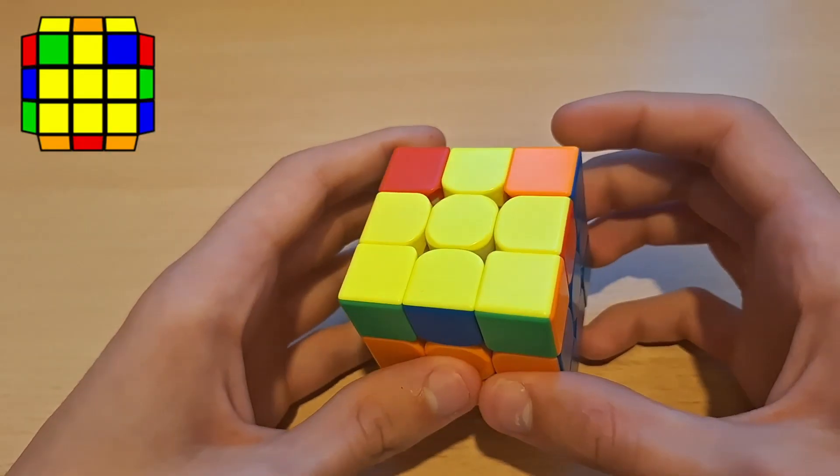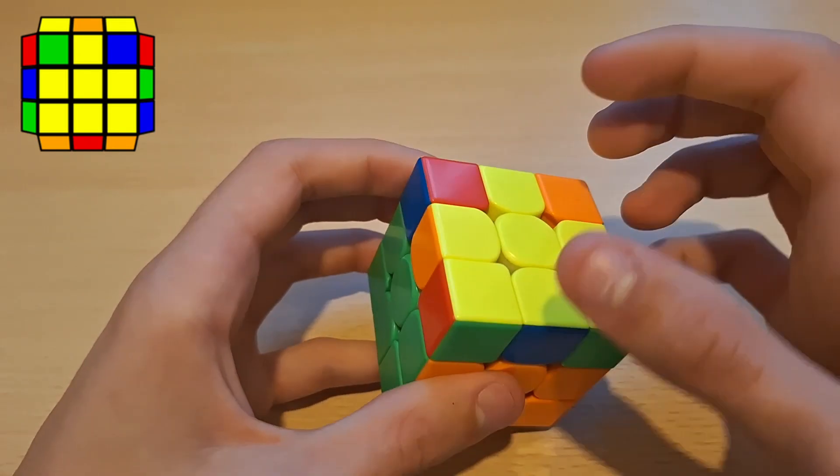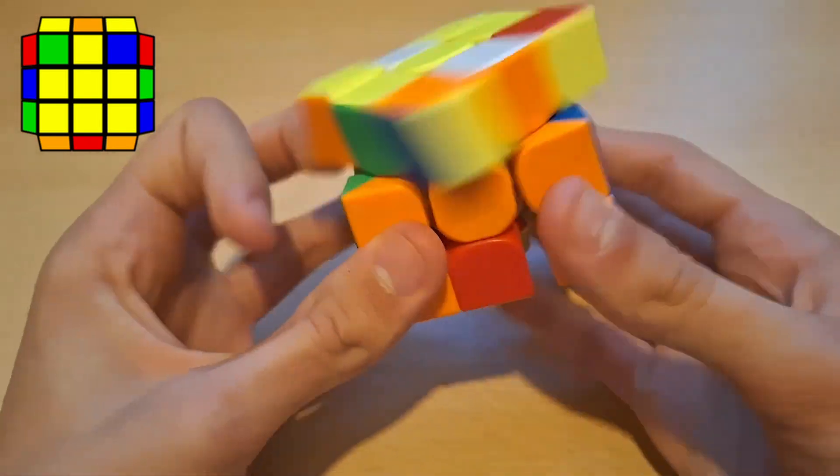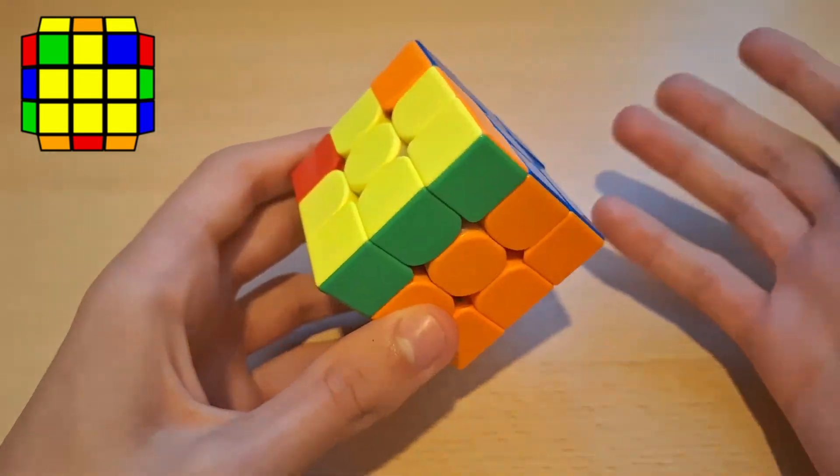Now for the next ZBLL case, so how I recognize this is it's just pretty much an H-perm as you can see, so if I were to do an H-perm here then it would be this case.